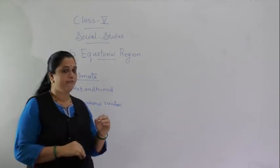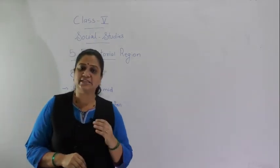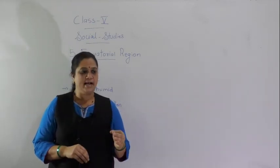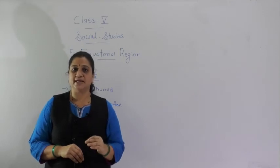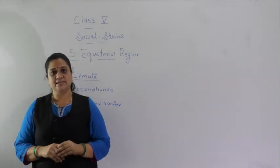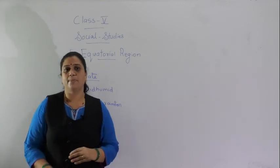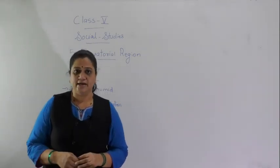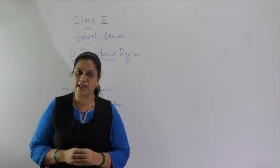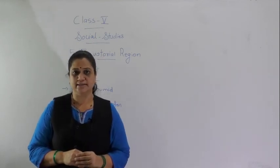The equatorial region is spread over three continents: Asia, Africa, and South America. As the torrid zone receives direct rays, it is hot throughout the year. The equatorial region also experiences equal days and nights, and conventional rainfall accompanied by thunderstorms and lightning. For today, read the lesson thoroughly, try to understand the concept. Thank you.